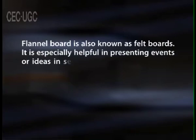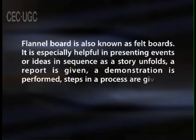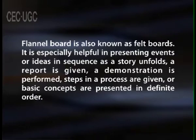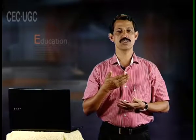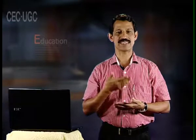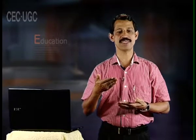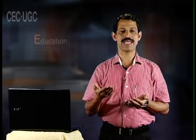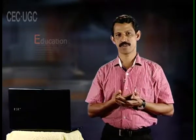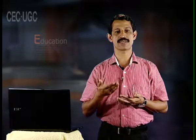The flannel board, also known as felt board, is especially helpful in presenting events or ideas in sequence as a story unfolds, a report is given, a demonstration is performed, steps in a process are given or basic concepts are presented in definite order. It can also be used for the layout of a farm, to experiment with different arrangements of items for a display, to assemble jigsaw maps, to show how a bill becomes a law and to make circle and bar graphs. An outline map can be sketched on the flannel board and cutouts of areas used to show how territory was added. One of the main advantages of the flannel board is its flexibility, which permits various arrangements to be tried experimentally.